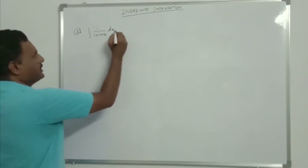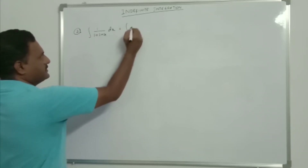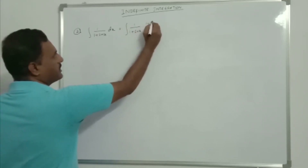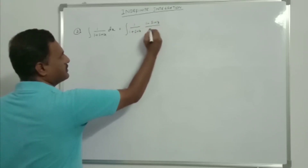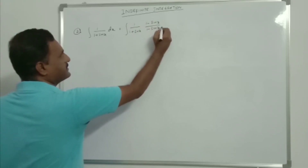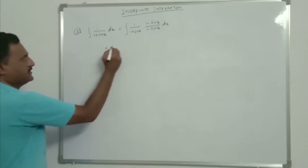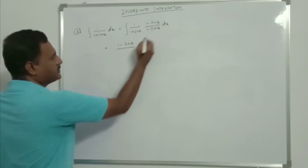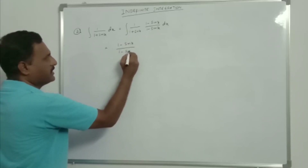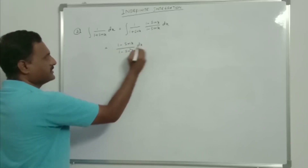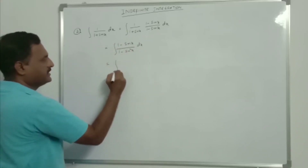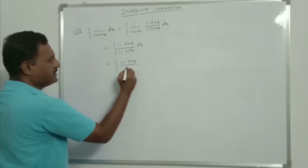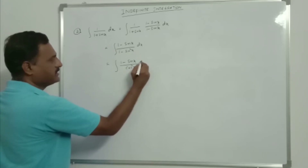Integration of 1/(1 + sin x) dx. Multiply and divide by (1 - sin x)/(1 - sin x). That is equal to (1 - sin x) / [(1 + sin x)(1 - sin x)], which is (1 - sin x)/(1 - sin²x) dx.